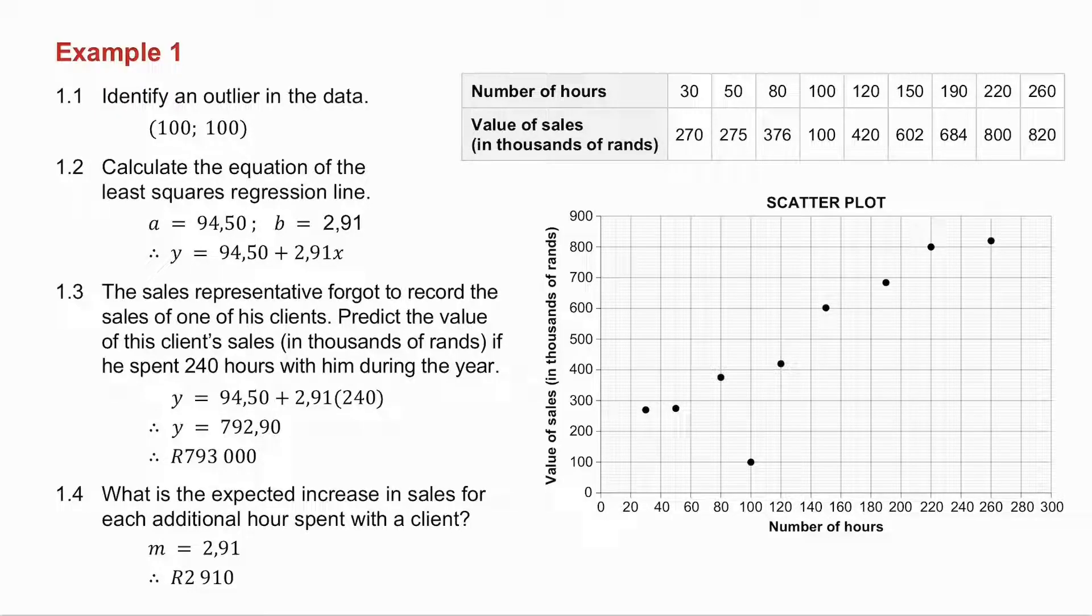In 1.3, they ask you to predict the value of the client's sales if he spent 240 hours with him. So I take the equation I've just got, make X equal to 240, and get the value of Y. And then remember that these sales are in thousands of rands, so I need to get it in thousands of rands.